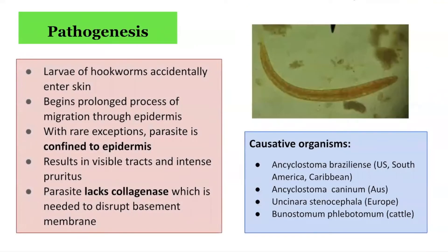In terms of the pathogenesis of cutaneous larva migrans, the larvae enter the skin and begin a prolonged process of migration through the epidermis. With rare exceptions, the parasite is confined to the epidermis and results in visible tracts and intense pruritus. Because the parasite lacks an enzyme called collagenase, which is needed to disrupt the basement membrane, it becomes trapped and travels within the epidermis.